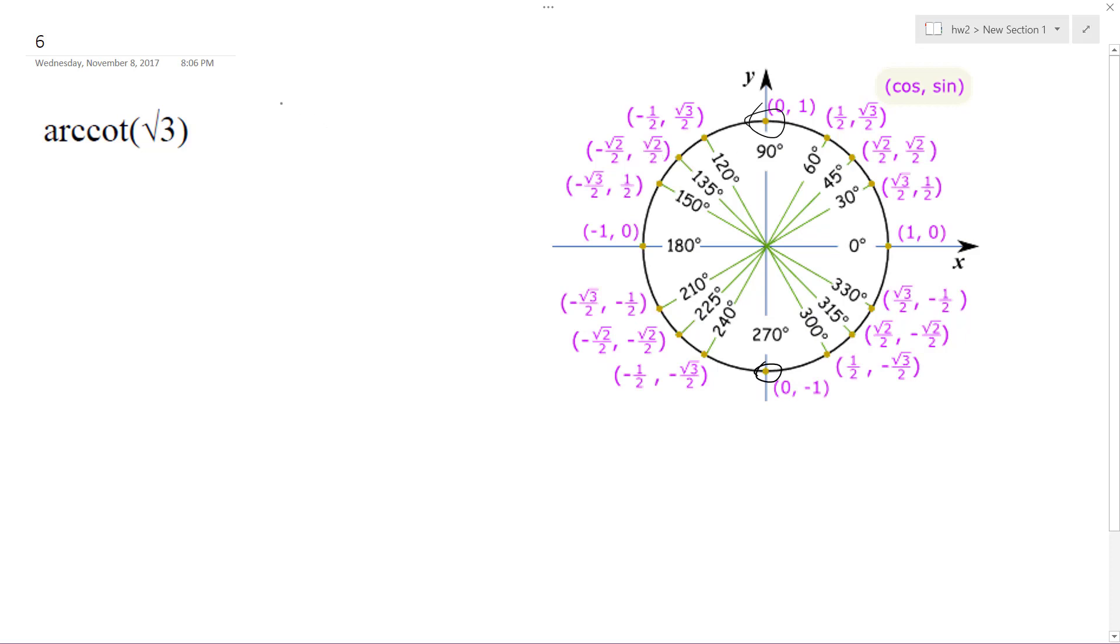Where does a cotangent, which is cosine over sine or x over y, equal root 3 and then 1? That's what you get the inverse of, so you should get pi over 6.